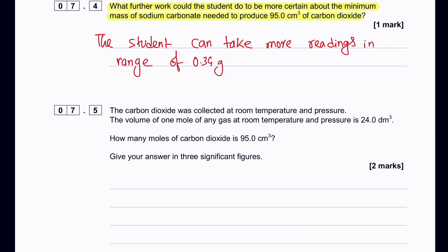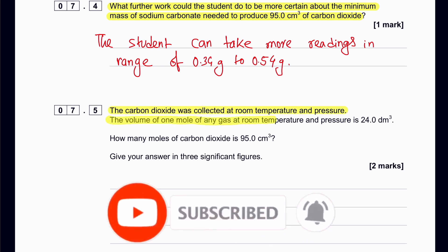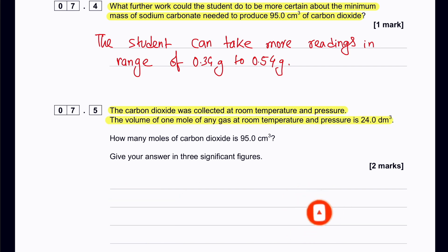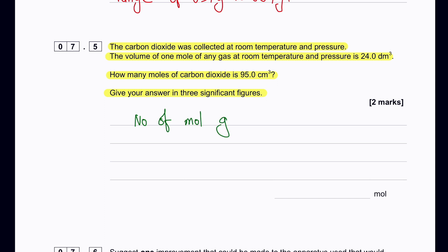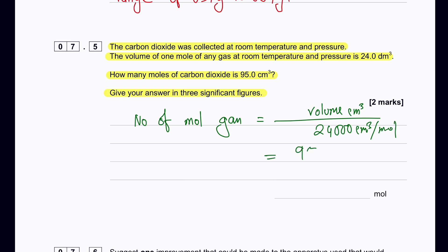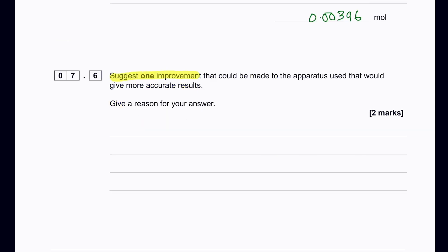The carbon dioxide was collected at room temperature and pressure. The volume of one mole of any gas at room temperature and pressure is 24 dm³. How many moles of CO₂ is 95 cm³? Number of moles = volume (cm³) ÷ 24,000 cm³/mol, so 95 ÷ 24,000 = 0.00396 mol.